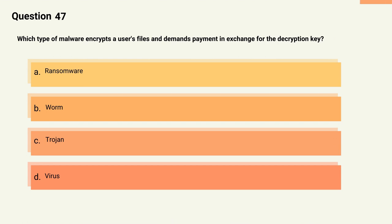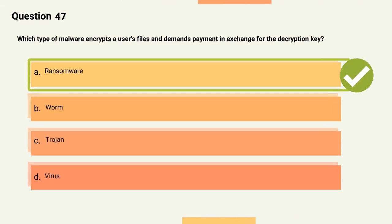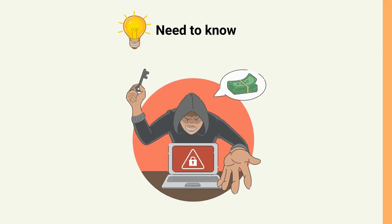Question 47: Which type of malware encrypts a user's files and demands payment in exchange for the decryption key? Options: A) Ransomware, B) Worm, C) Trojan, D) Virus. The correct answer is Option A, Ransomware. Explanation: Ransomware is a type of malware that encrypts a user's files and demands payment in exchange for the decryption key.